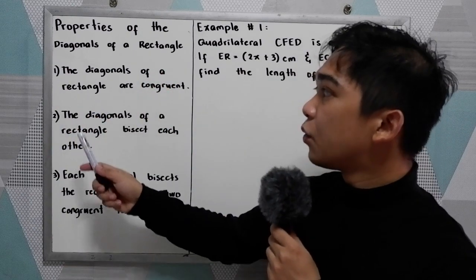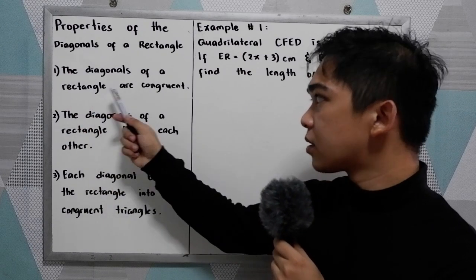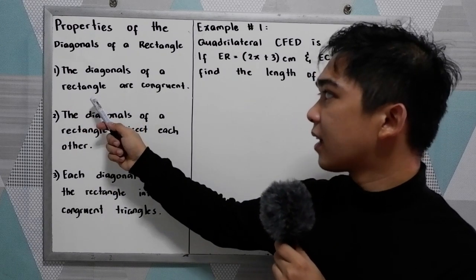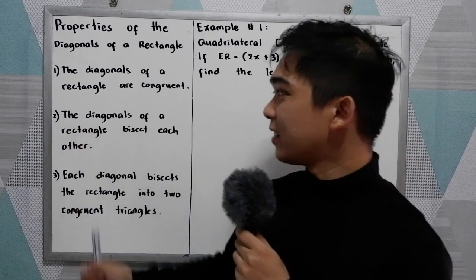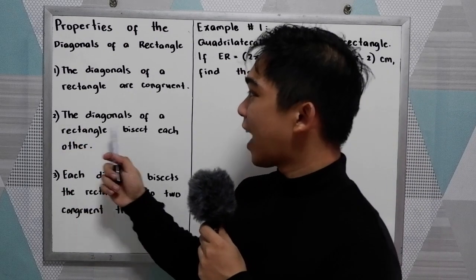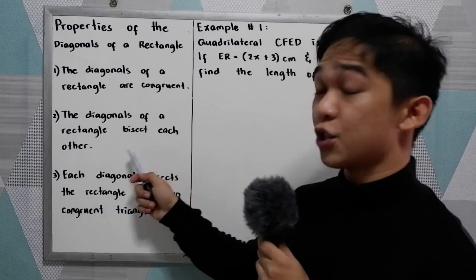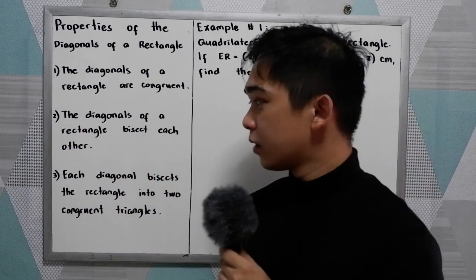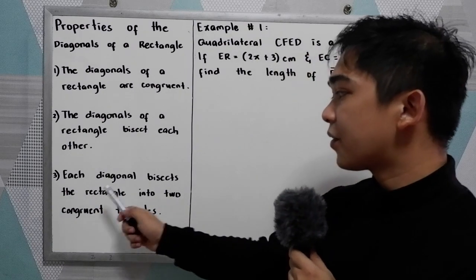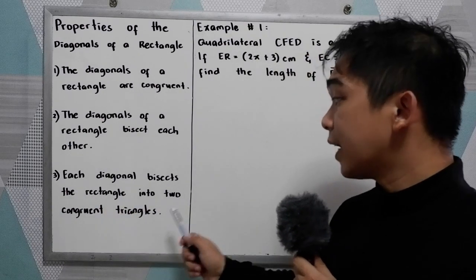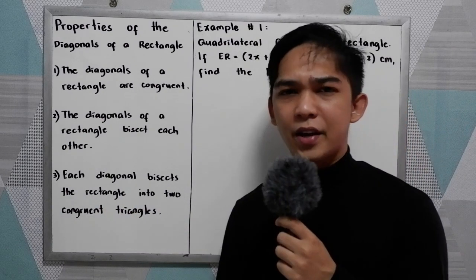First, the diagonals of a rectangle are congruent. Second, the diagonals of a rectangle bisect each other. And third, each diagonal bisects the rectangle into two congruent triangles.